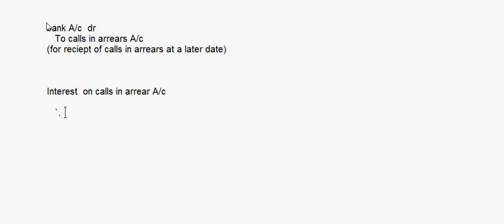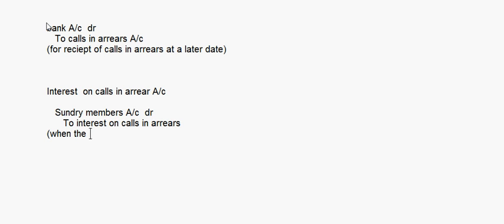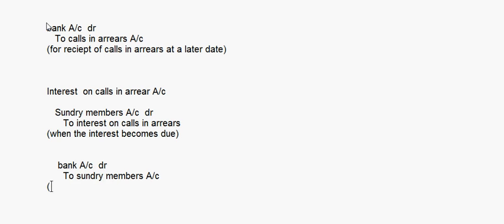The first entry for interest on calls in arrears will be: sundry members account debit, to interest on calls in arrears account. This is when the interest becomes due. When the interest is actually received, we write bank account debit, to sundry members account. This is on receipt of the interest money.